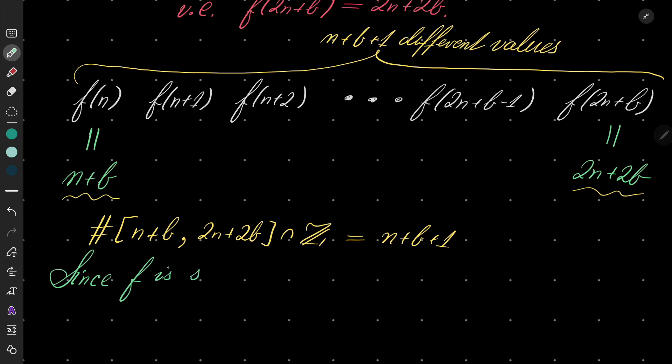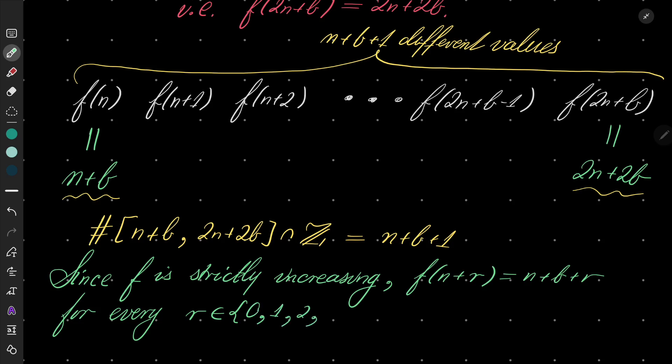So since f is strictly increasing, f(n+r) must equal n+b+r for every r ∈ {0, 1, 2, ..., n+b}. There is no other possibility because our interval has exactly n+b+1 integers and we must have exactly n+b+1 different values.